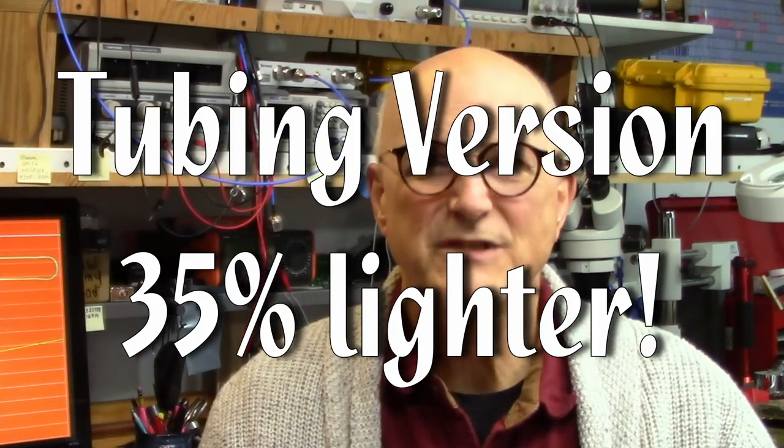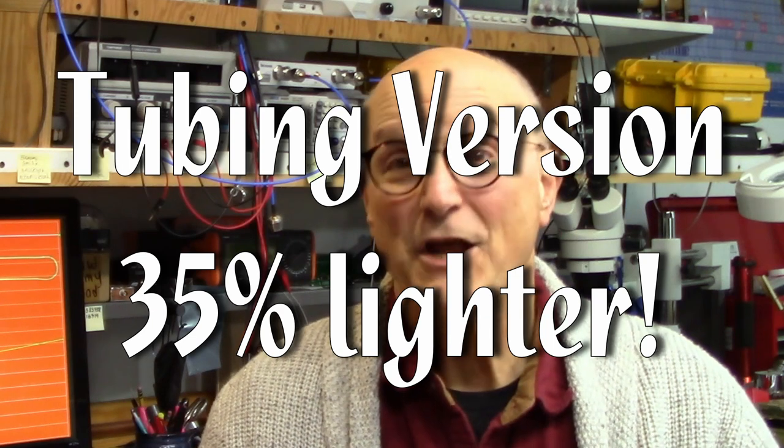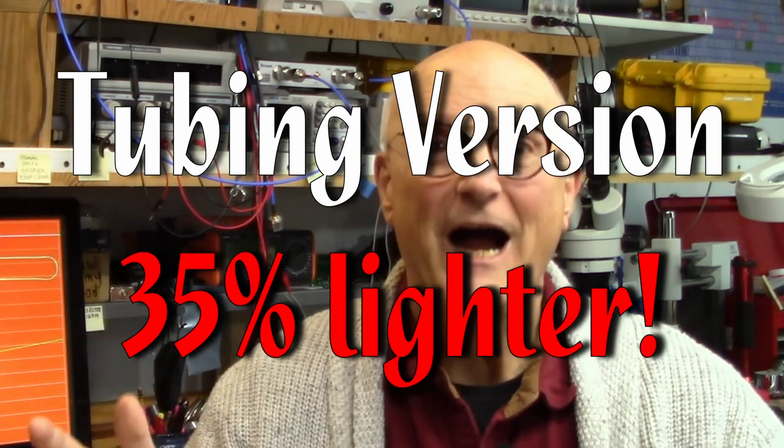One last important note, I mentioned that the motivation to build this antenna using tubing as opposed to the solid copper was weight. So I have to ask, how much did we actually reduce the weight of the antenna by building it with tubing? As compared to the solid copper wire version, the tubing version is 35% lighter, yes 35% lighter and this includes the 4 to 1 balun in both cases.